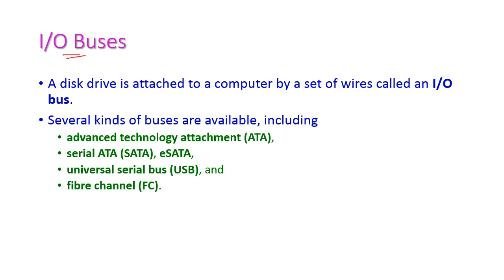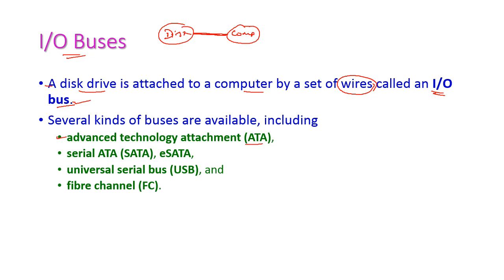I/O buses are used to connect the computer with the disk — all data is transferred between the disk and the computer through these buses. A disk drive is attached to the computer by a set of wires called I/O buses. Common types include ATA (Advanced Technology Attachment), SATA (Serial ATA), USB (Universal Serial Bus), and Fiber Channel (FC).